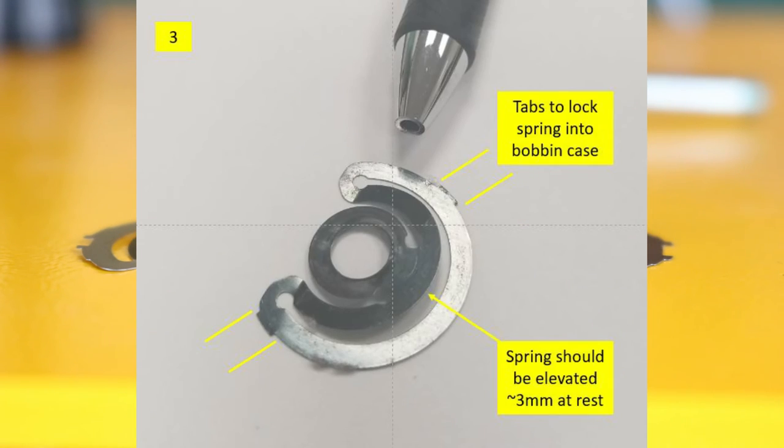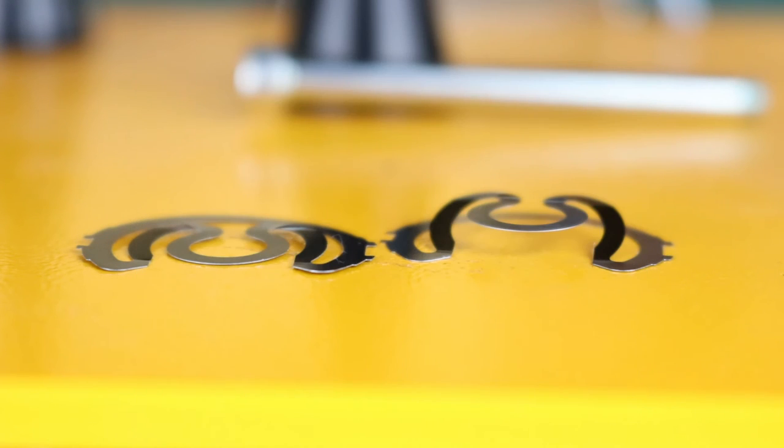A spring at rest that measures about two to three millimeters from top to bottom has enough strength to keep appropriate pressure against the bobbin and bobbin case to prevent backlash to the thread.